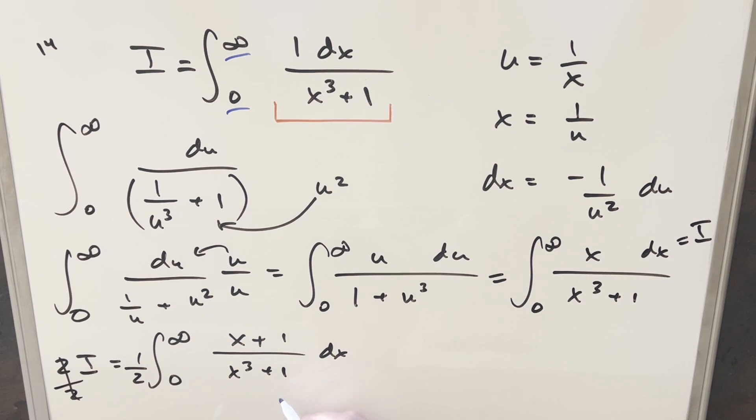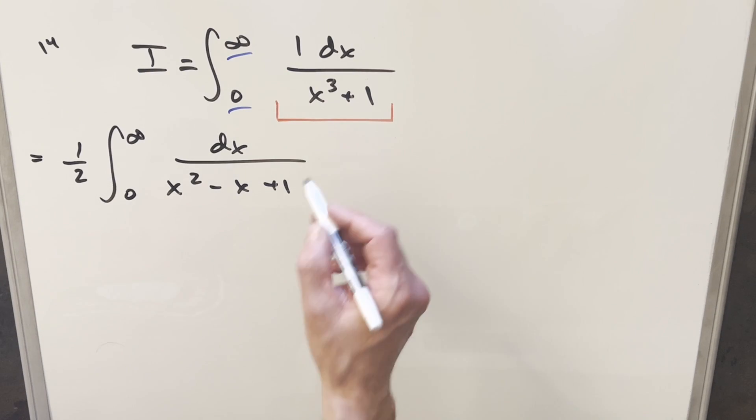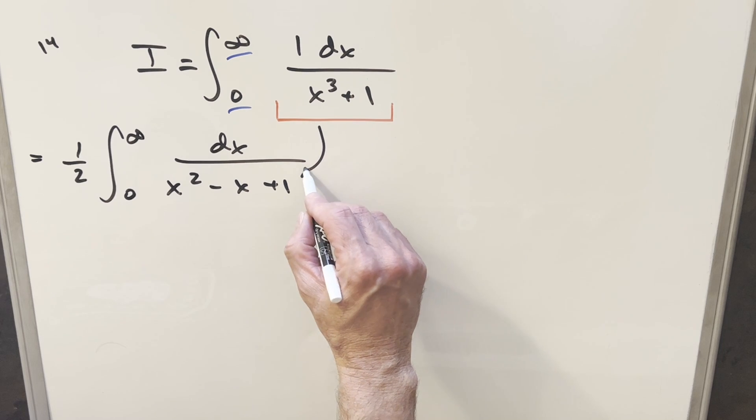But then for x cubed plus 1, what I can do with that is I can actually factor that. Actually, let's bring it over to a new copy of the integral over here. So when I factor that, it's going to look like x plus 1 times x squared minus x plus 1. So I'll bring all this other stuff along. We'll have our 1 half in front. Then our numerator is just going to be x plus 1, and then we'll have our dx here. But doing that, we get some nice cancellation, and now we just have a 1 in the numerator. And I suppose it was kind of a lot of work just to go from here to here.